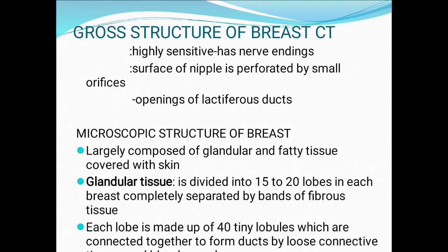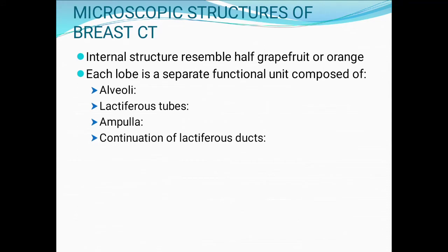Next, microscopic structure of the breast: largely composed of glandular and fatty tissue covered with skin. Glandular tissue is divided into 15 to 20 lobes in each breast, completely separated by bands of fibrous tissue. Each lobe is made up of 40 tiny lobules connected together by loose connective tissue. Internal structure resembles a half grapefruit or orange. Each lobe is a separated functional unit composed of alveoli, lactiferous tubes, and ampulla — a continuation of the lactiferous ducts.